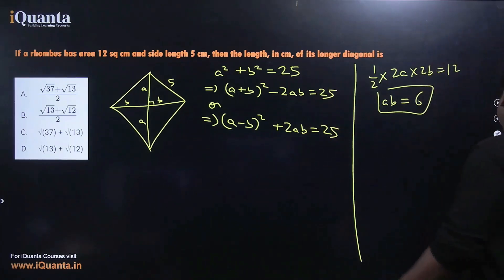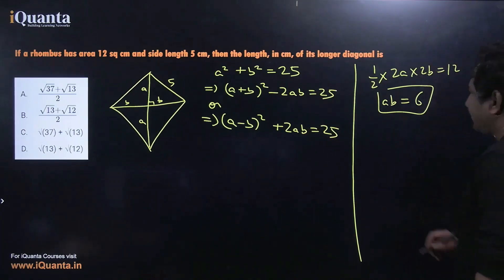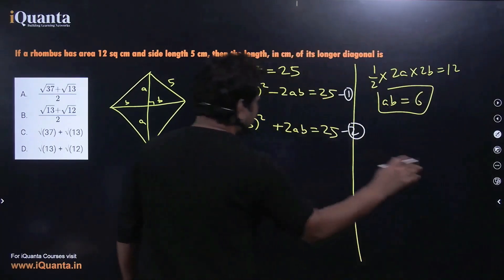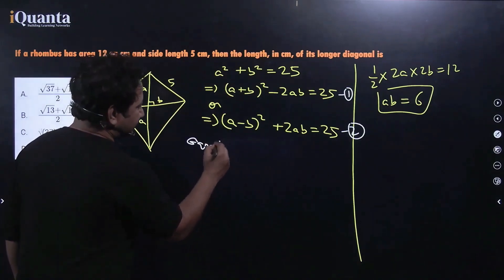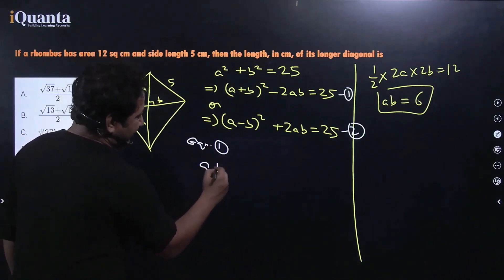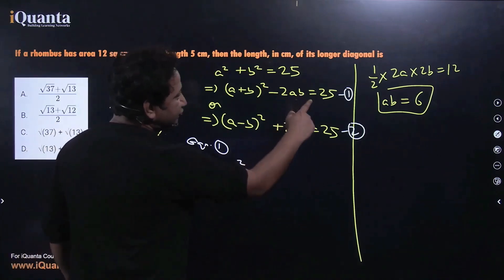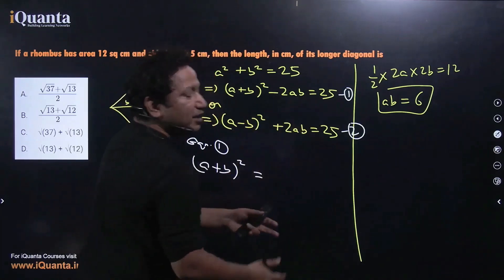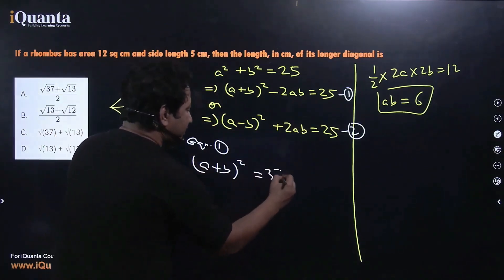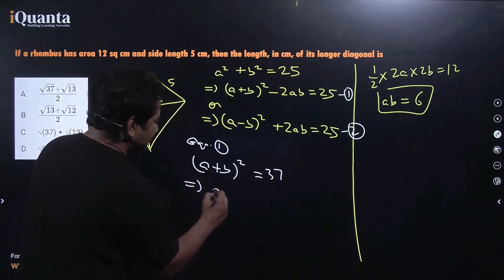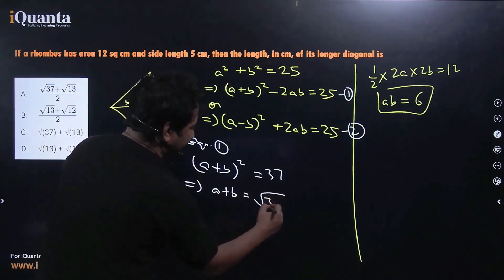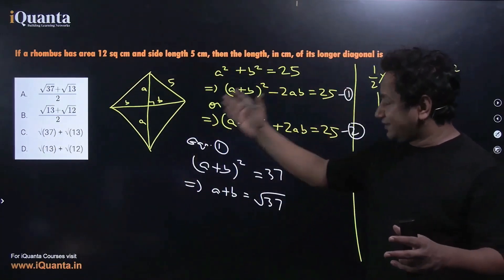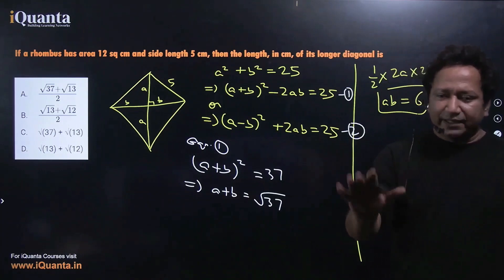Now we can replace the value of ab = 6 in these two equations, which I'll mark as equation 1 and equation 2. Putting ab into equation 1: (a + b)² = 25 + 2×6 = 25 + 12 = 37. So (a + b) = √37 — we take the positive square root since a diagonal can never be negative.